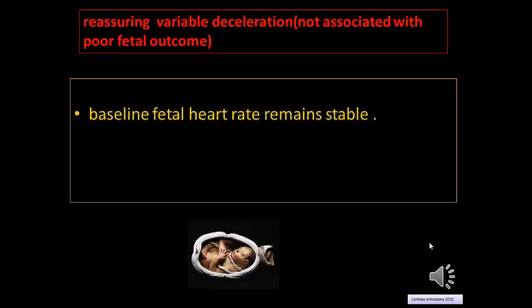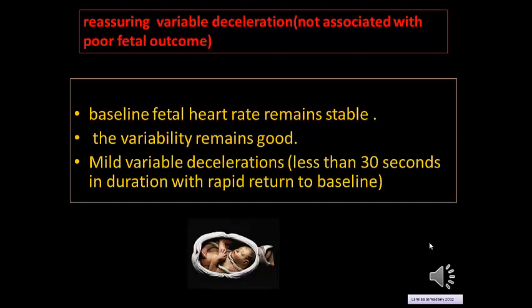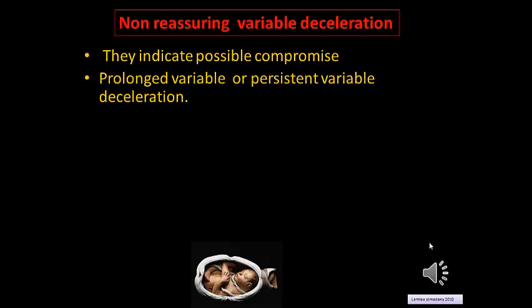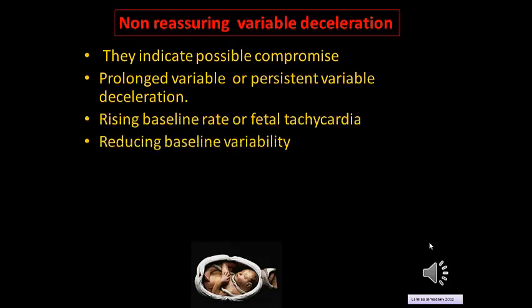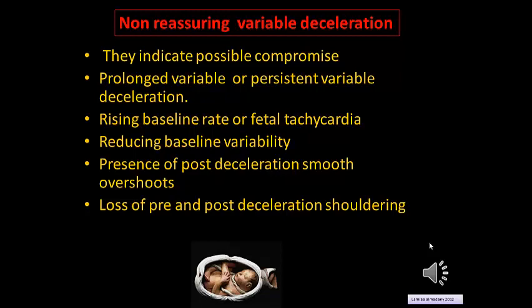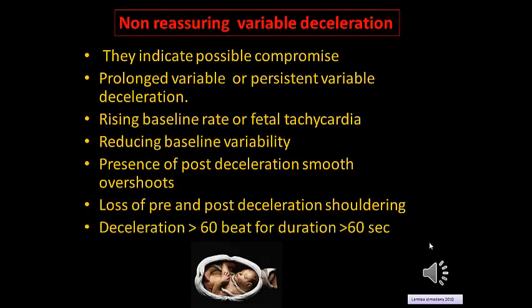Reassuring variable decelerations not associated with poor fetal outcome are characterized by a stable baseline fetal heart rate, good variability, and mild variable decelerations less than 30 seconds in duration with rapid return to baseline. Non-reassuring variable decelerations indicating possible compromise include prolonged or persistent variable decelerations, rising baseline heart rate or fetal tachycardia, reducing baseline variability, presence of post-deceleration smooth overshoot, loss of pre- and post-deceleration shouldering, and decelerations more than 60 beats in amplitude lasting more than 60 seconds.